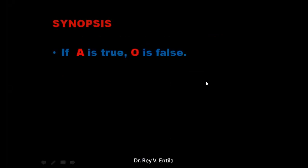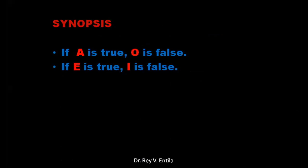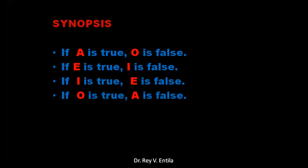Synopsis of contradictories: if A is true, O is false — that is contradictory. If A is true, O is false. So there is no escape: it's either-or. If one is true, the other is false; if one is false, the other is true. That is why it is called contradictory. For example: you say you have a boyfriend, then tell someone else you have none — both cannot be true at the same time.